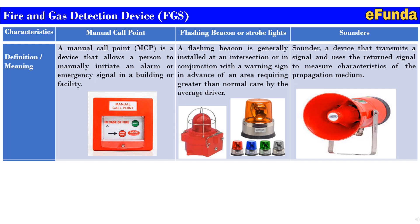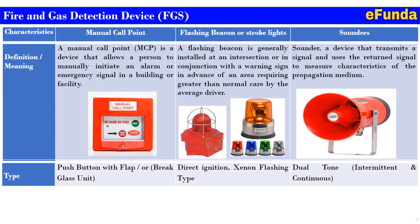The sounder is a device that transmits a signal and uses that signal to measure the characteristics of the propagation medium. Referring to the picture, one can see the sounder assembly. The types are: for manual call point — push button type with a flap or a break glass unit; for flashing beacon — direct ignition xenon flashing type; and for the sounder — dual tone, that is intermittent and continuous tones.